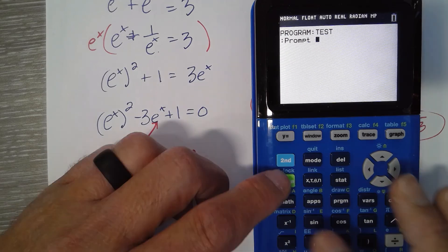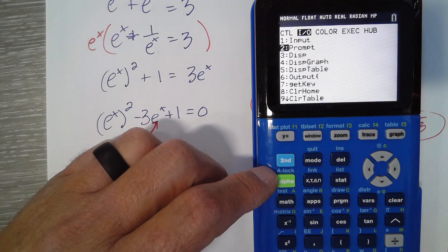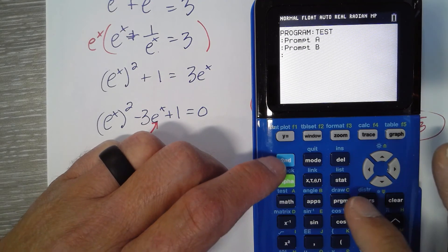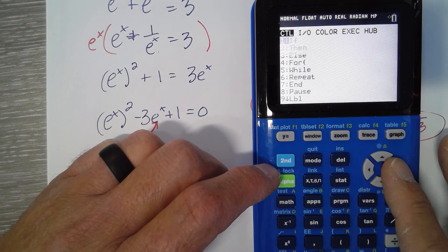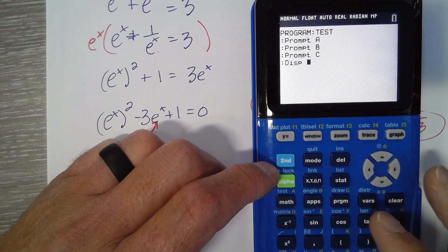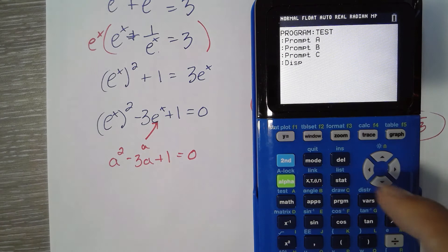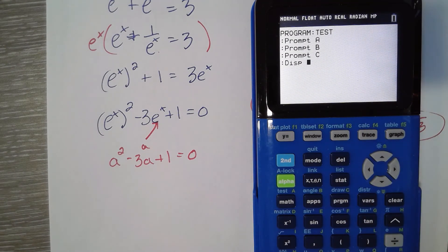Prompt, alpha A, and then program, prompt, alpha B, program, prompt, alpha C. Then you're going to display, and then you type it all in. But the program button again is where you get all of your stuff for programming.